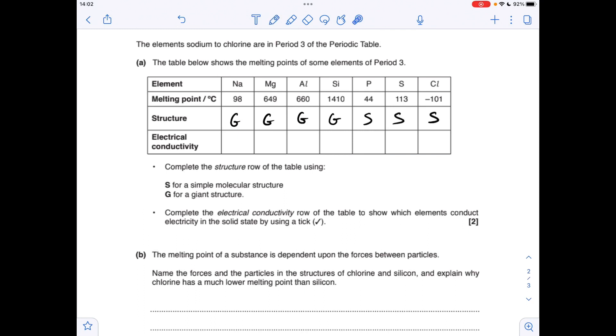And for the electrical conductivity row, all we've got to do is give it a tick if it is an electrical conductor. So obviously all those metals are, but the four non-metals—silicon through chlorine—are not, so we'll just leave those blank.